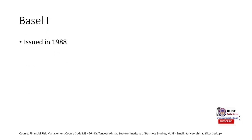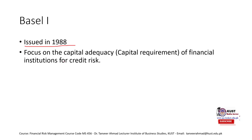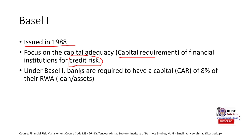Basel I was issued in 1988 — this was the first accord from the committee formed in 1974. The main focus of Basel Accord One was on credit risk, which is the risk that the borrower may not repay the amount. The focus is on capital adequacy — the capital requirement of financial institutions to minimize credit risk.